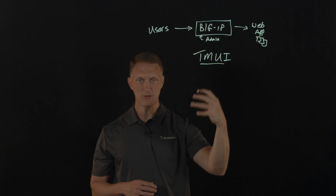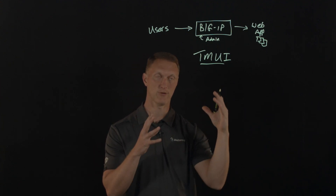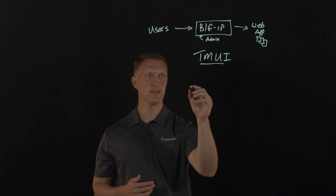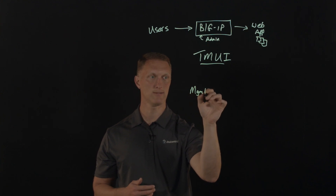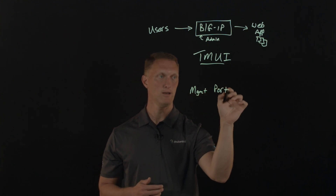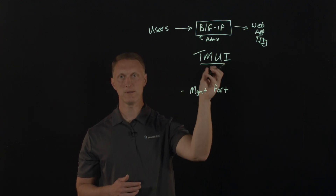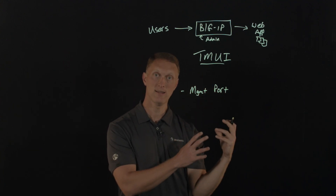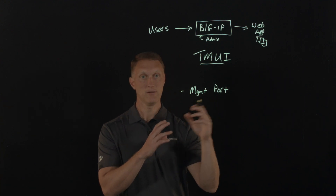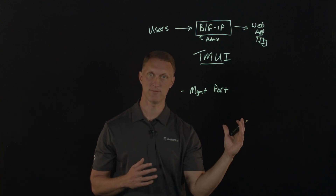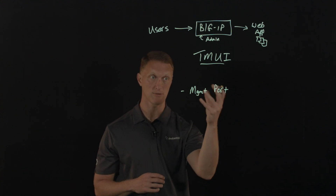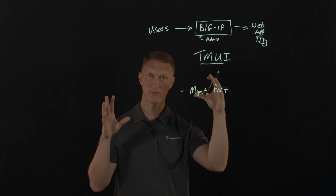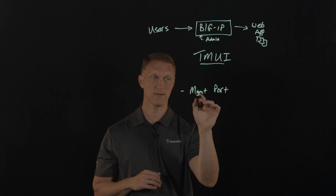If you cannot update, there are a few mitigation actions to help protect you against this vulnerability while you're waiting to update. The first thing I'll mention is the management port, or management interface, on the Big-IP. This needs to not be publicly accessible to the internet — it needs to be locked down and only accessible from a secure network. There are many Big-IPs out there that have their management interface exposed to the open internet, and that is definitely something you need to avoid.